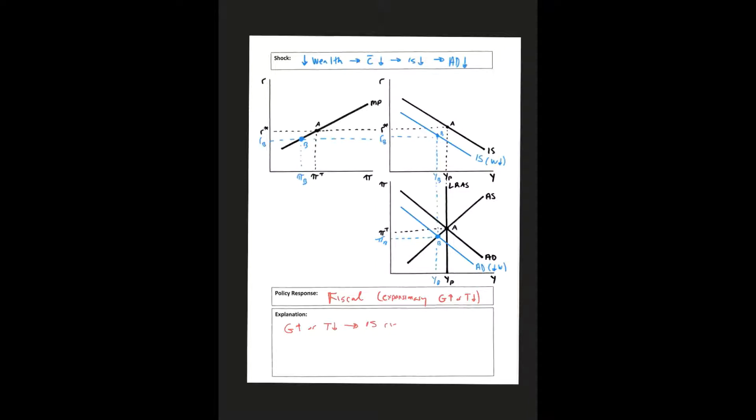Right? My IS curve is going to go to the right, which will bring my aggregate demand curve back to the right as well.